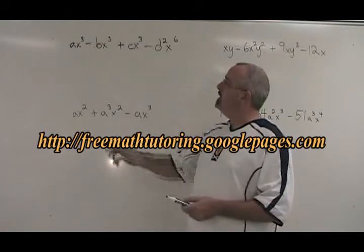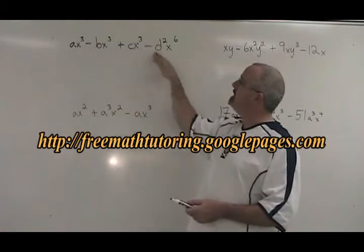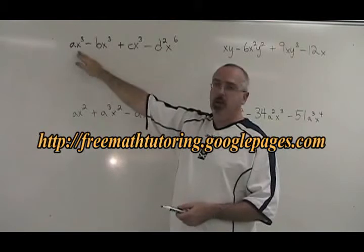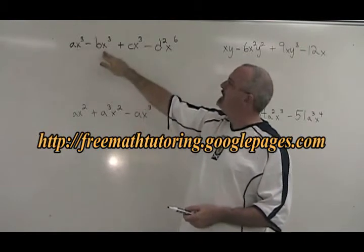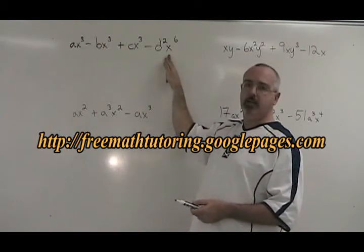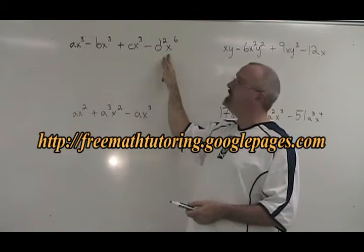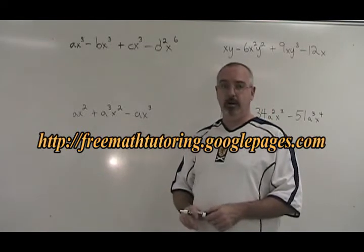The trick is, you look at the four X terms and you say, which is the smallest one I see? X cubed, X cubed, X cubed, X to the sixth. The smallest one we saw was X cubed, so that is our greatest common factor.